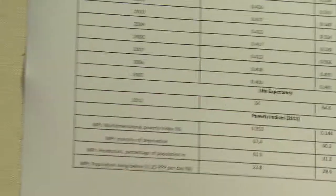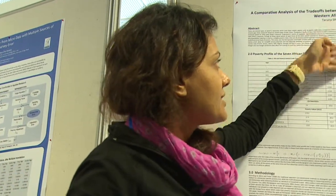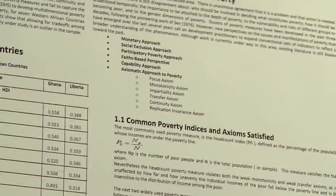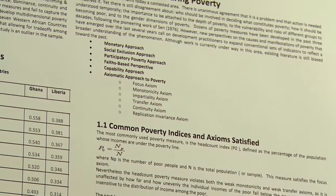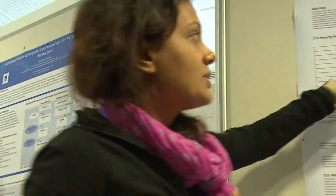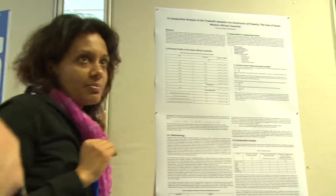There are different approaches to measuring poverty — the monetary approach, social exclusion, and others — but one of them is the axiomatic approach to poverty, which was proposed by Sen. That is, poverty measures should not be ad hoc; they should be based on certain axioms. Looking at the common poverty indices such as the poverty headcount index or the poverty gap index, they do satisfy the focus axiom, but not the other axioms.